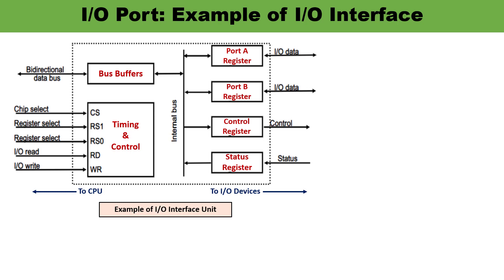Let me give you an example of an IO port — input-output port. In this diagram for IO interface, you can see there are two data registers called ports: port A and port B. There is also a control register, a status register, a bus buffer, and a timing and control circuit. The interface communicates with the CPU through the data bus.